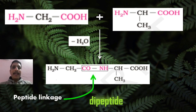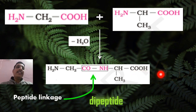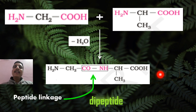The dipeptide is formed by the reaction between two amino acids. If one more amino acid reacts with this dipeptide — the COOH joins with the NH₂ — we get a tripeptide. To that tripeptide, if one more amino acid reacts, we get a tetrapeptide, and so on.